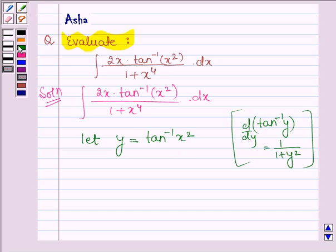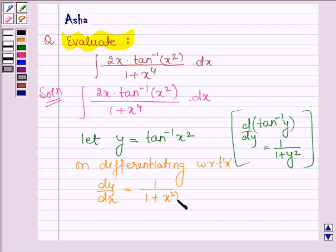So here I am differentiating both sides with respect to x. We have on the left hand side dy divided by dx and on the right hand side we have 1 divided by 1 plus x square whole square into derivative of x square with respect to x.